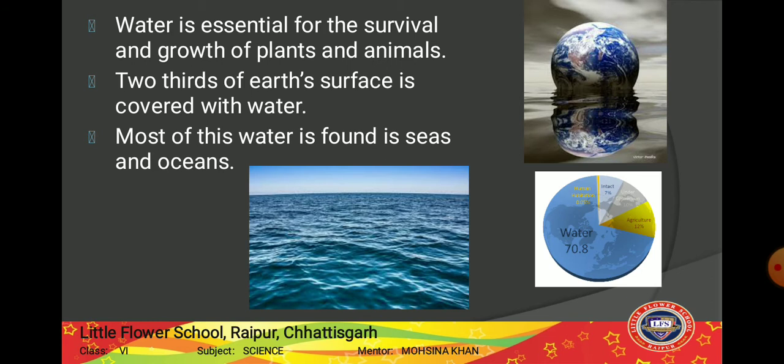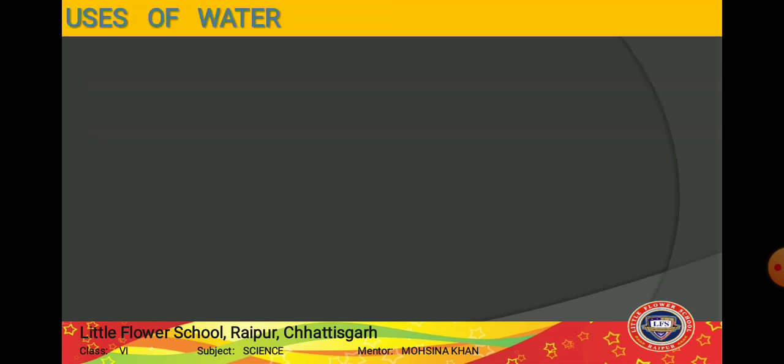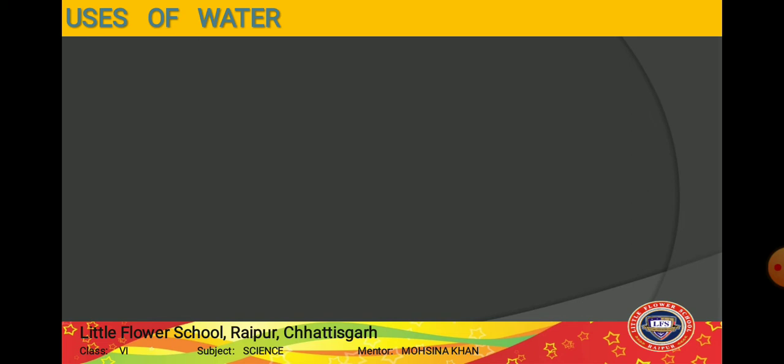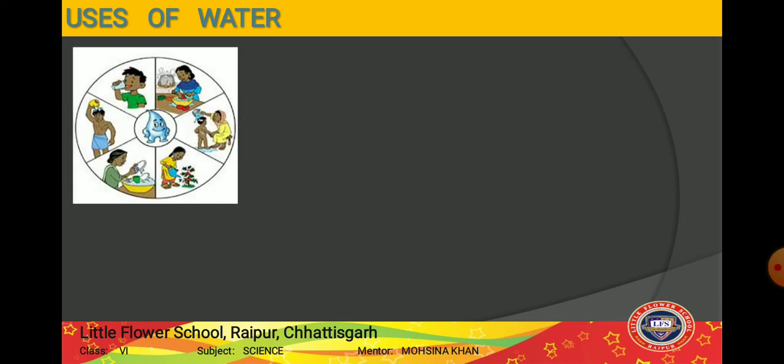Now let's see what are the uses of water. We need water for drinking, cooking, washing clothes, utensils, flushing toilets, watering plants, and cleaning floors. These are the domestic uses of water.